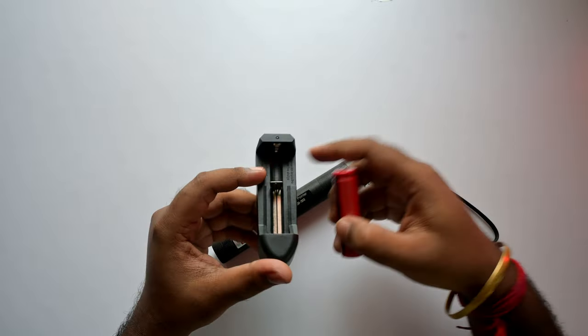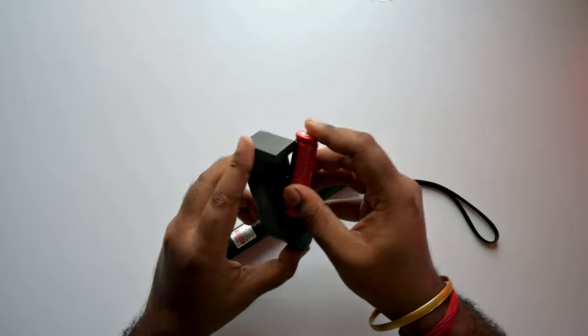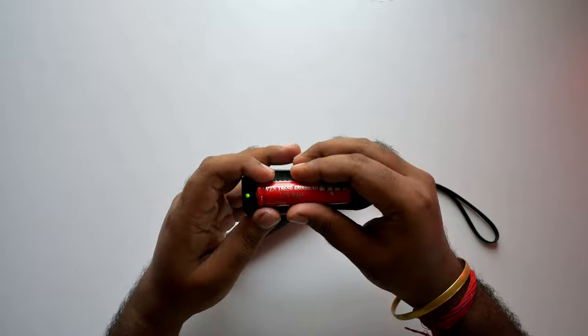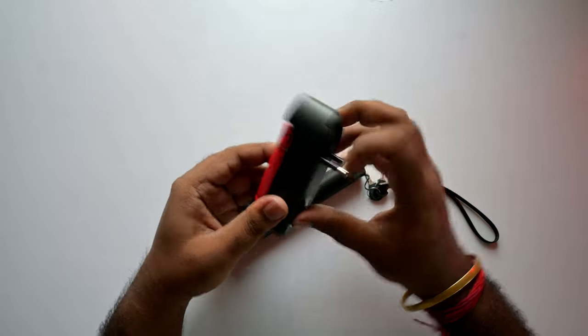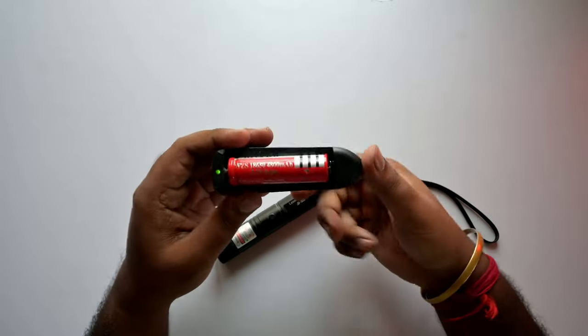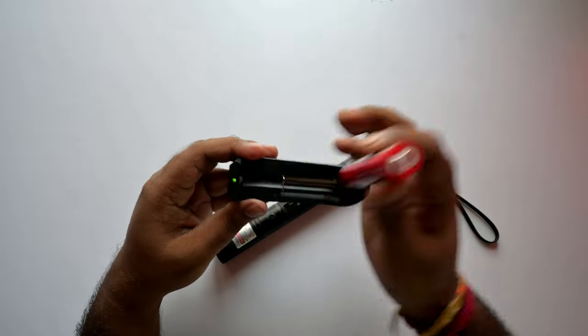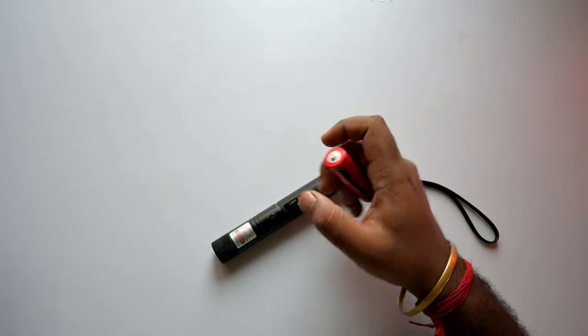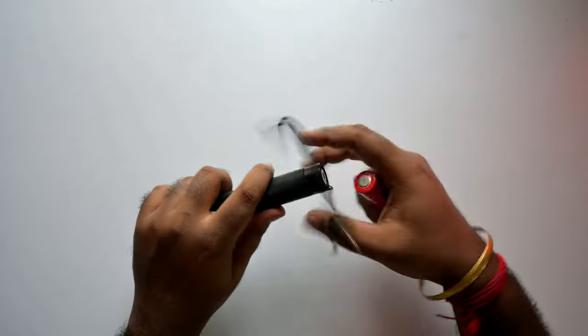So here is the charger. The battery will fit like this. Green light will indicate once you connect the battery. While charging, red light will indicate. Once fully charged, the red will turn green again. Now let's install the battery.